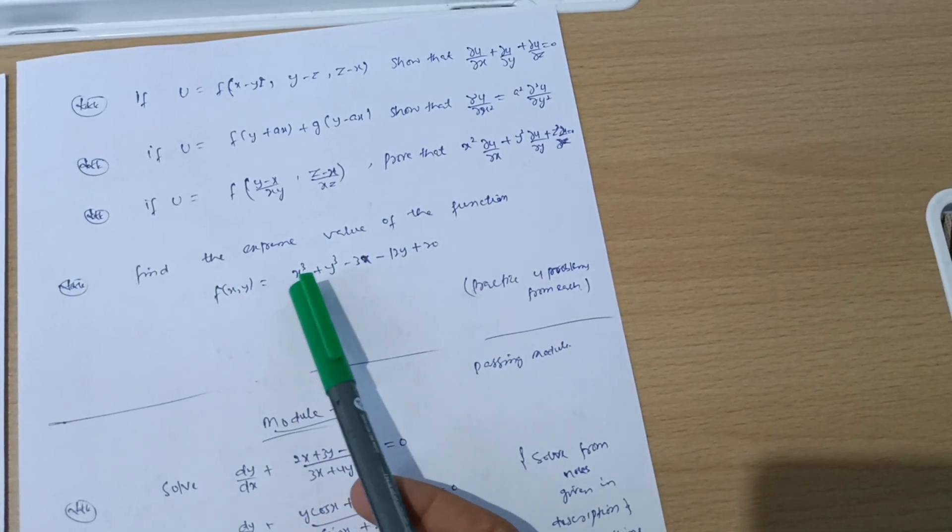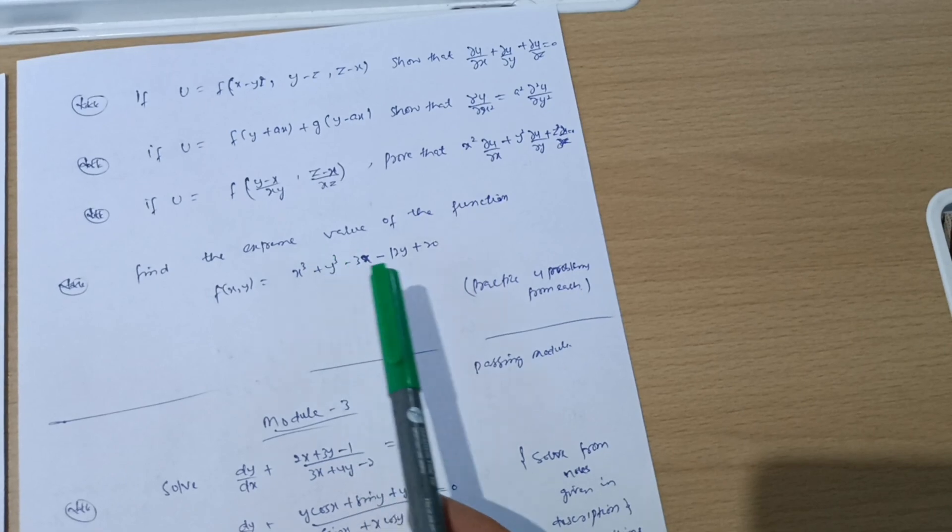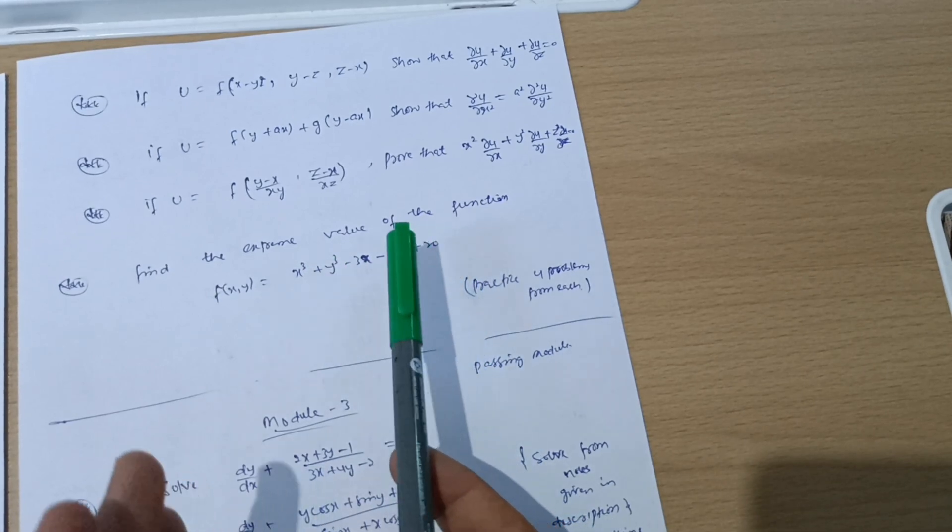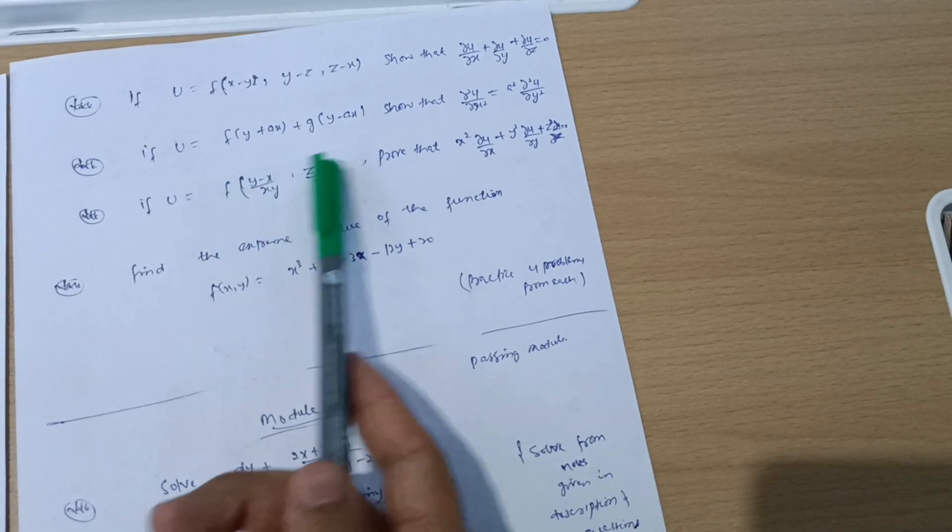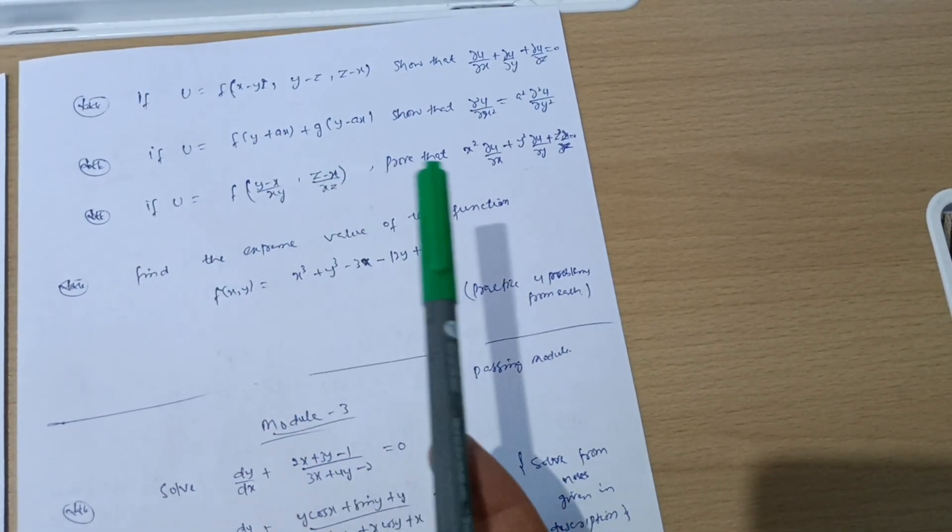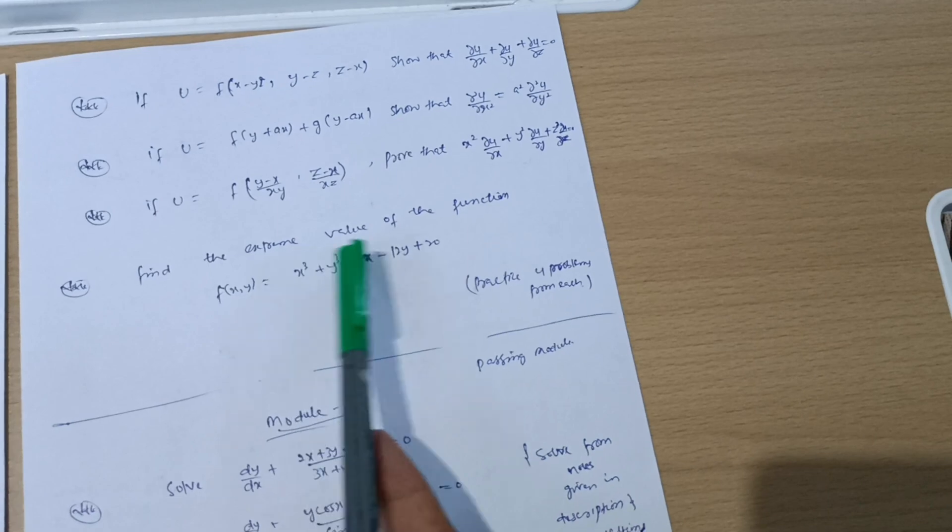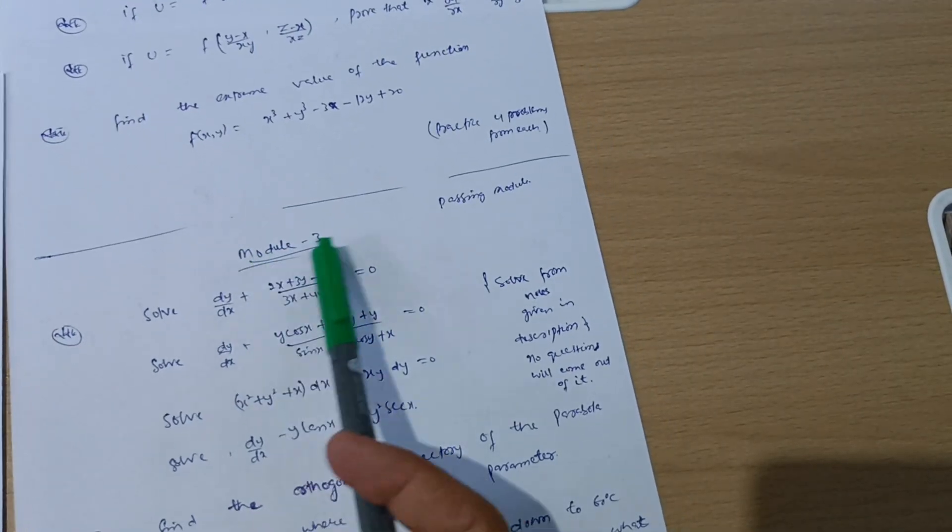These are very simple ones and you can easily get 14 marks from this particular module. You should practice four problems from each concept. Already I have taken Jacobian four problems, and go through Maclaurin series three problems or four problems, and also practice extreme value functions so that you will be on the safer side.